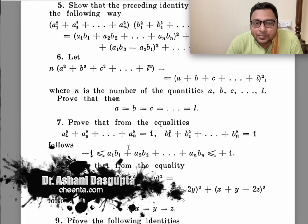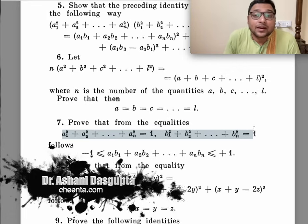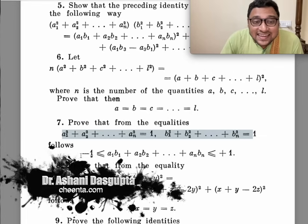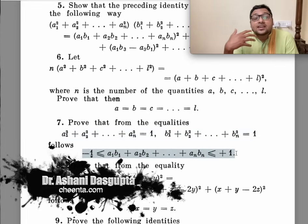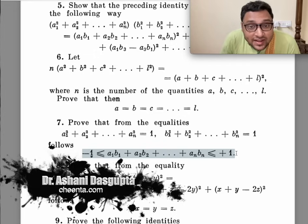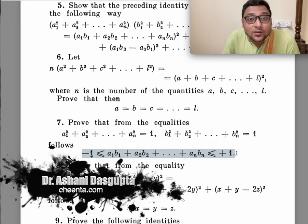So, for example, if you look at this one, prove that from the equalities, a one square plus a two square up to a n square equal to one, b one square plus b two square up to b n square equal to one, this inequality follows. So those of you who have been doing inequalities in mathematical Olympiads, you are very familiar with this. This is the seed of the Cauchy-Schwarz inequality, right?